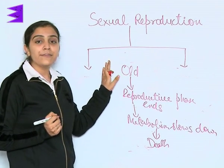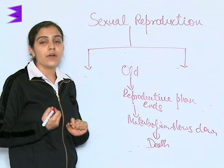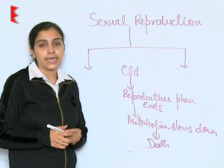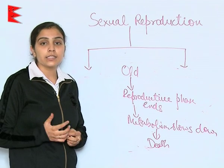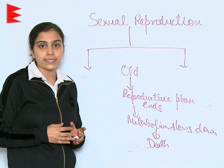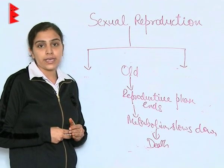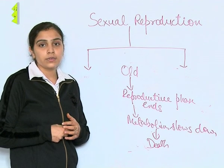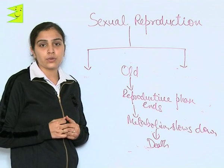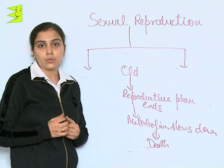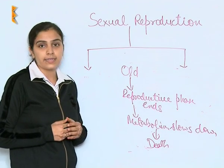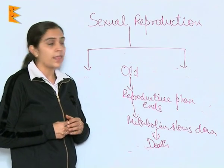So hence, if we observe ourselves only, we can clearly study and see the three distinctive phases, which is growth, then maturity, reproduction, and senescence — that is death.